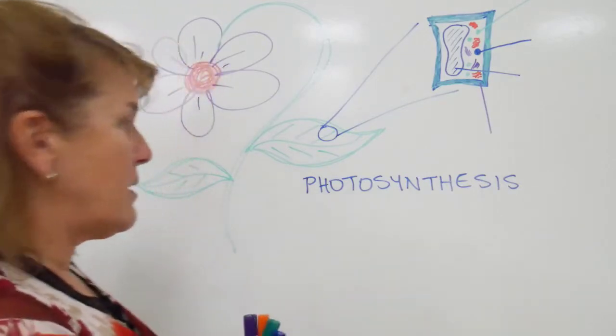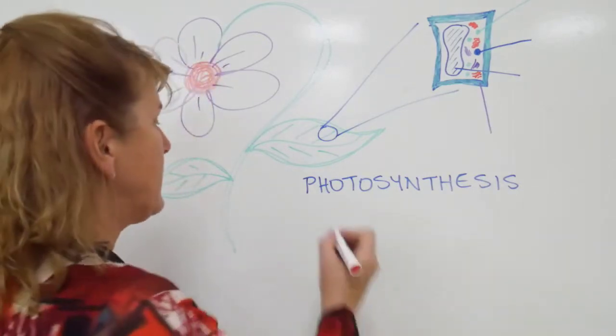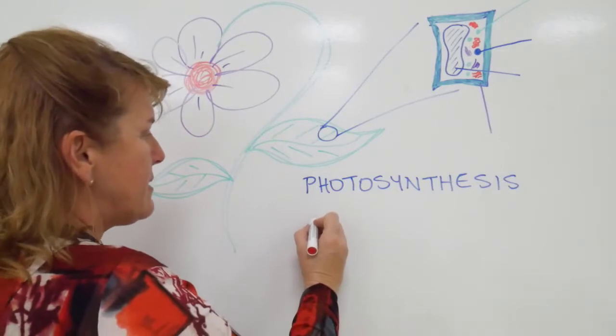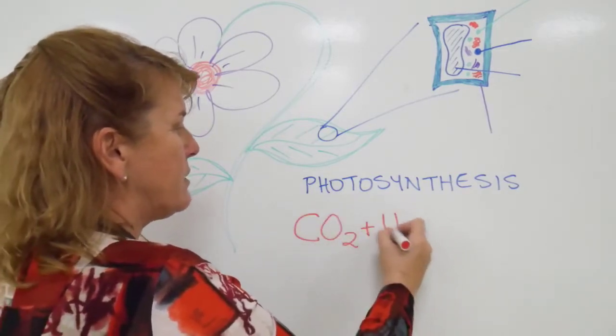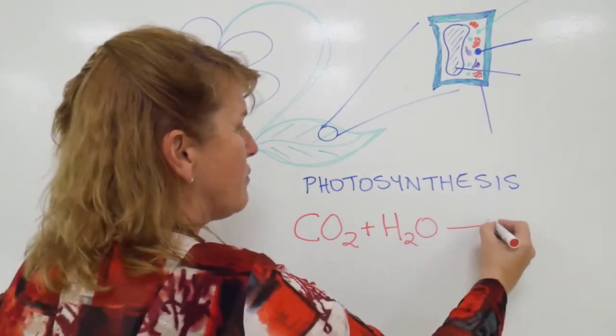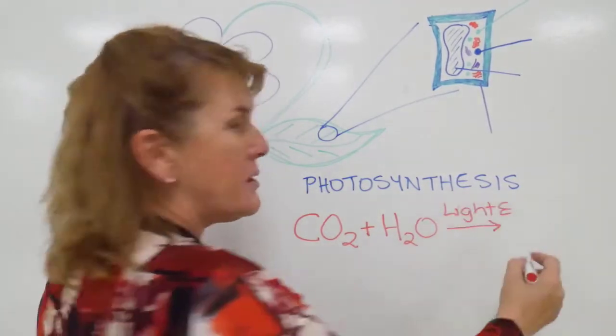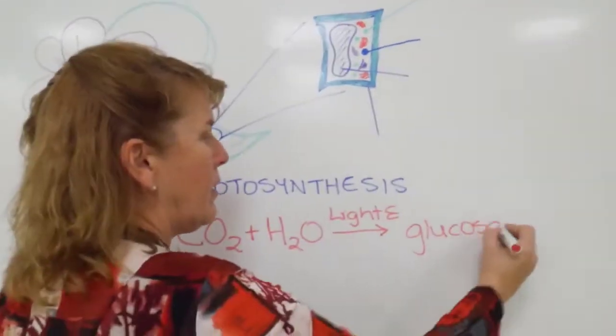The process can be written as a word equation. The word equation is that the plant takes in CO2 plus water and in the presence of light energy generates glucose and oxygen.